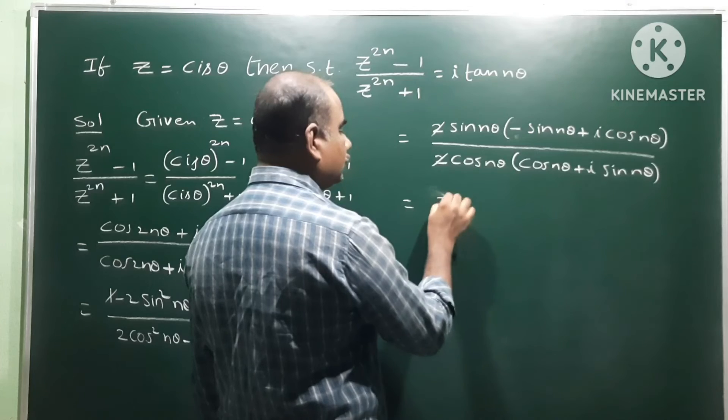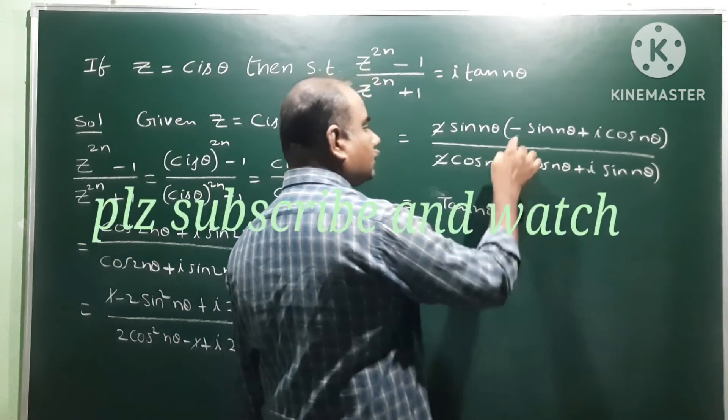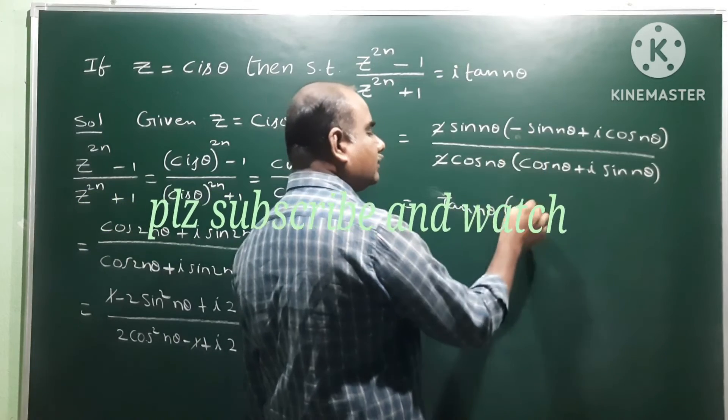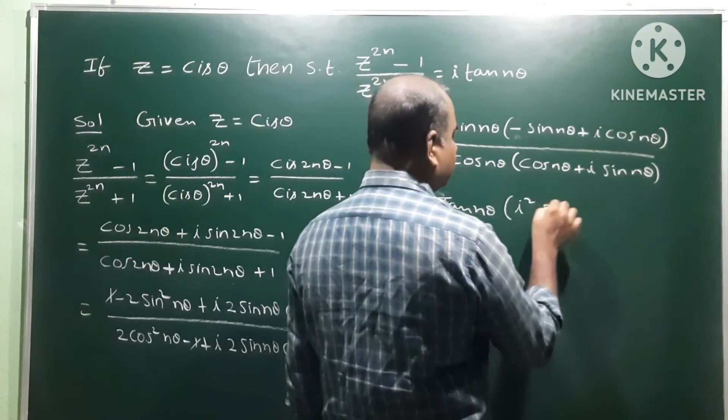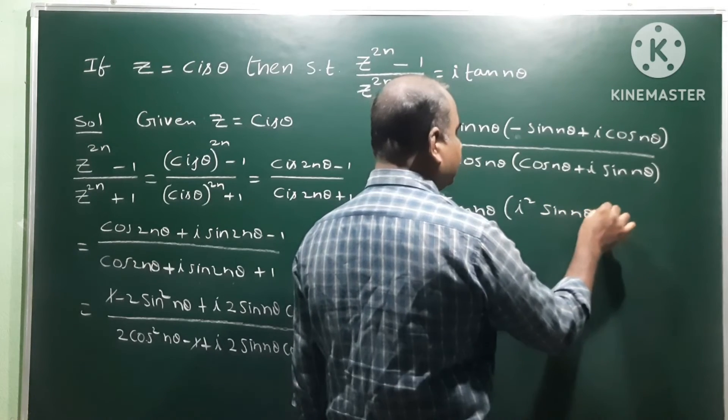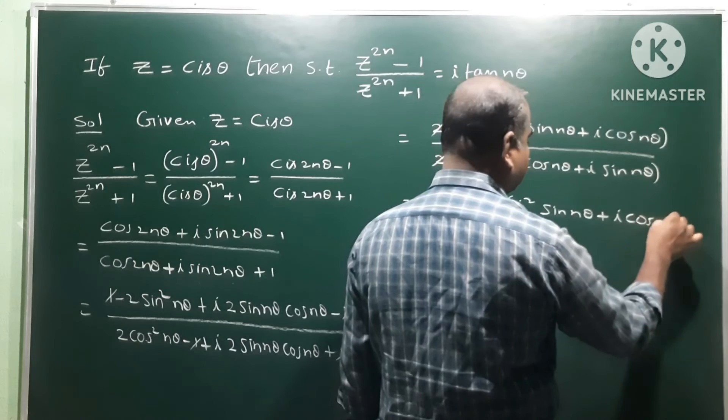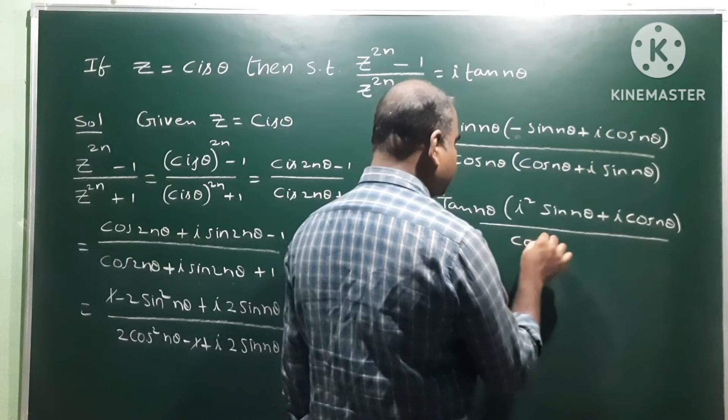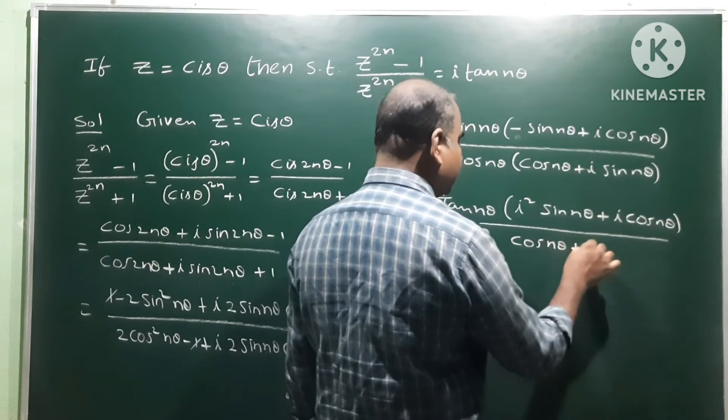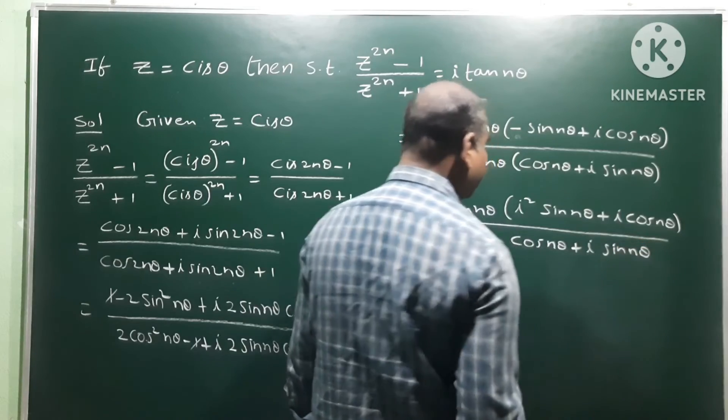by cos nθ plus i sin nθ. So it is equal to i tan nθ